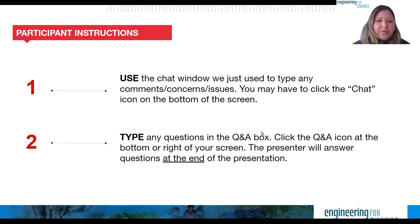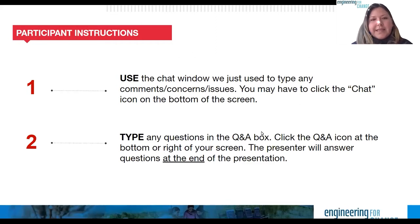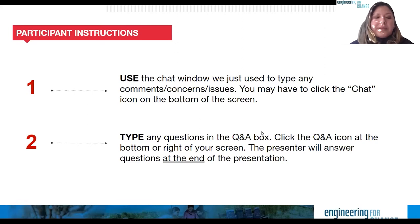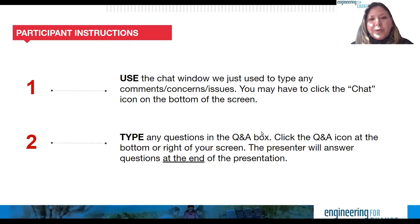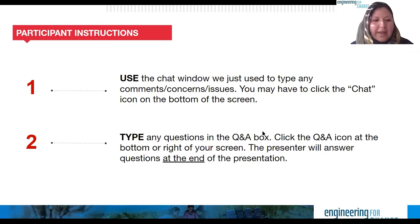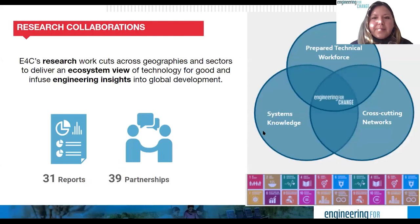Another housekeeping item: you can use the chat window to share remarks during the webinar. If you have technical difficulties, you can send a private message to Engineering for Change Admin. If you're listening to the audio broadcast and encounter trouble, try hitting stop and then start. Please use the Q&A window in the chat during the session — we'll open Q&A at the end, so type your questions there beforehand.